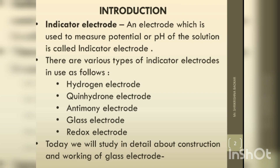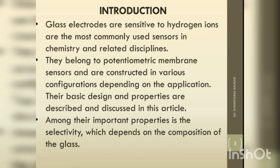Today we will study in detail about the construction and working of the glass electrode. Glass electrodes are sensitive to hydrogen ions and are the most commonly used sensors in chemistry and related disciplines. They belong to potentiometric membrane sensors and are constructed in various configurations depending on the application.